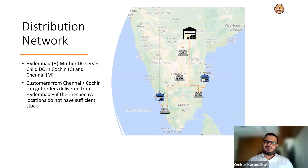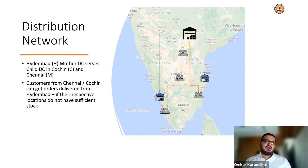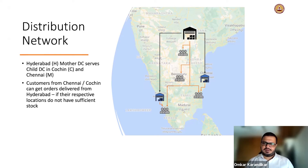Now coming to the distribution network — Fabmart is focused on South India right now. There are plans for pan-India and even beyond-India expansion, but it all needs money. So right now Fabmart is focusing only on the South geography. To start with, they have opened three distribution centers. Hyderabad is the mother DC — it's the buying and sourcing point. Then there are two child DCs, also called forward DCs: one in Chennai and one in Cochin.